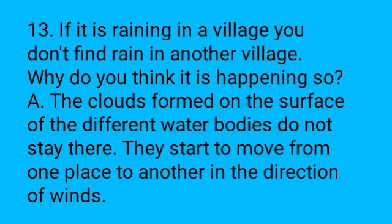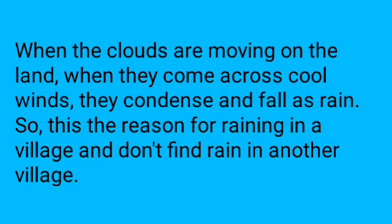Thirteenth question: If it is raining in a village, you don't find rain in another village nearby — why? Answer: The clouds formed on the surface of different water bodies do not stay there; they move from one place to another in the direction of winds. When the moving clouds come across cool winds, they condense and fall as rain, which is why it rains in one village but not in another.